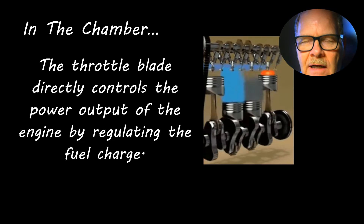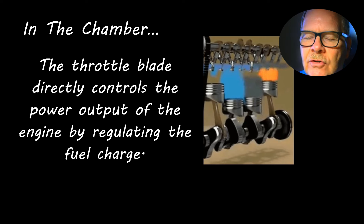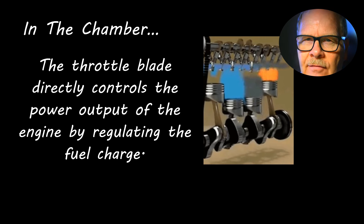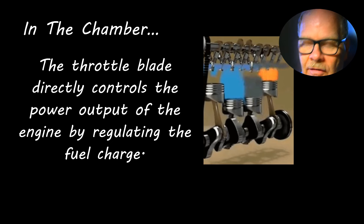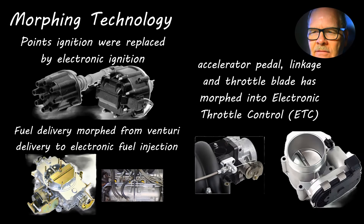The throttle plate controls the power output and regulates the fuel charge. You regulate the fuel charge on a diesel the same way, but some diesels have throttle plates. The ones with throttle plates typically have them because they want to cause a low pressure area right behind where the air goes in so EGR will flow the right way. If you've got a diesel with an EGR system — the 6.0 liter had a throttle plate, some Duramax engines had throttle plates — that was to facilitate EGR flow. It had an electronic throttle body and you had no control over it; it would decide when to operate.